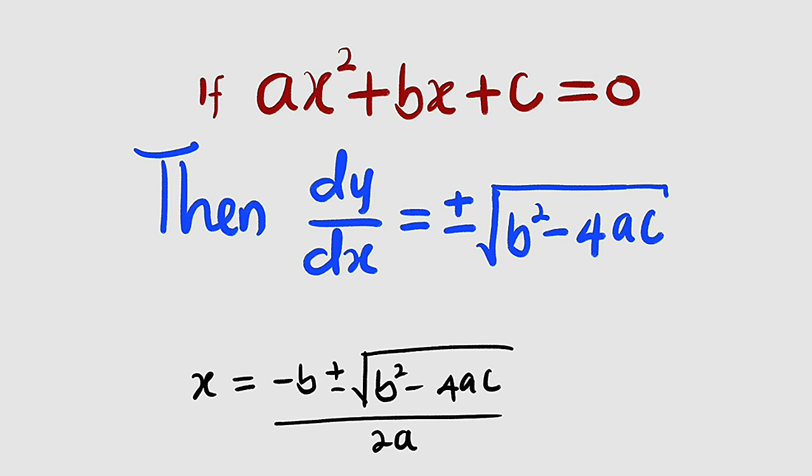So for any form of quadratic equation you have, all you have to do is differentiate the left hand side, then equate it to plus or minus the square root of b² - 4ac. Simplify, solve for x, and you're good to go.